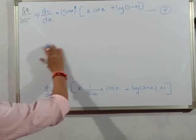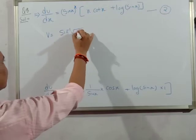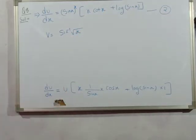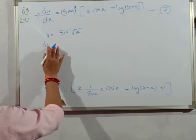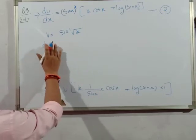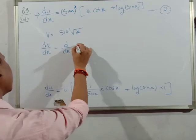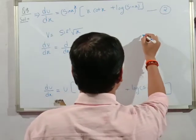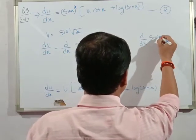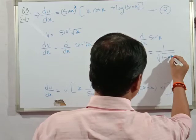Now we need to find the derivative of v. v equals sin inverse of under root x. On differentiating both sides with respect to x: derivative of sin inverse(√x). The derivative of sin inverse(x) is 1 by under root(1 minus x squared).